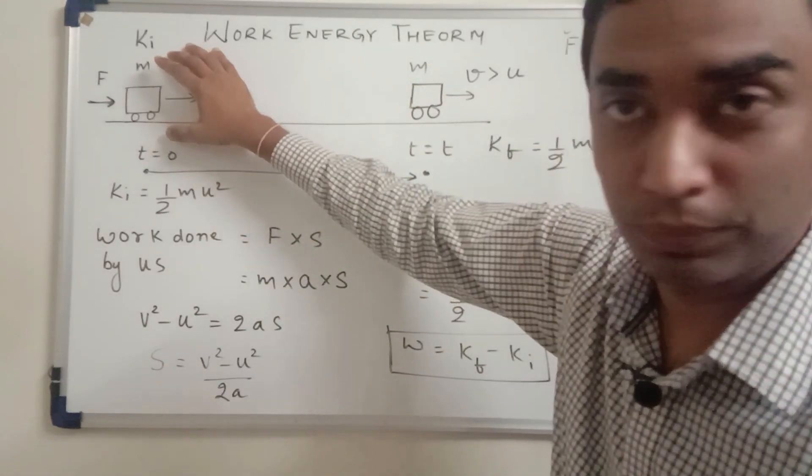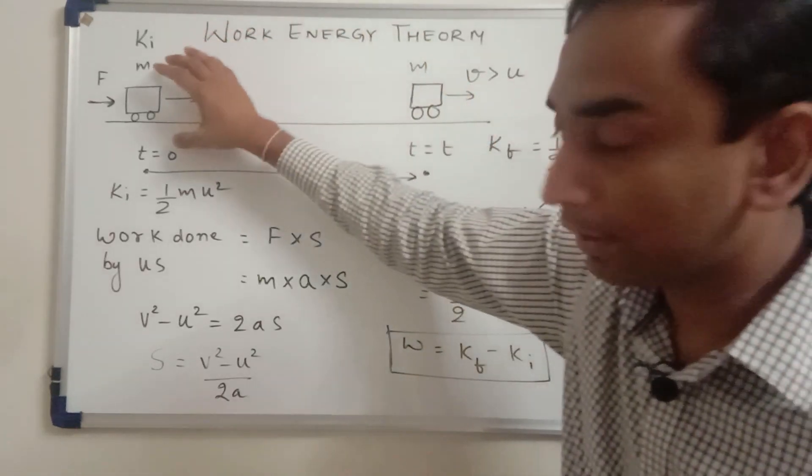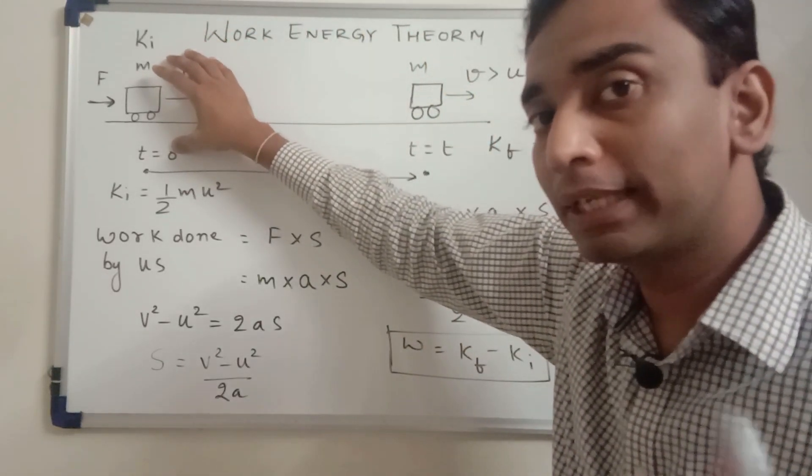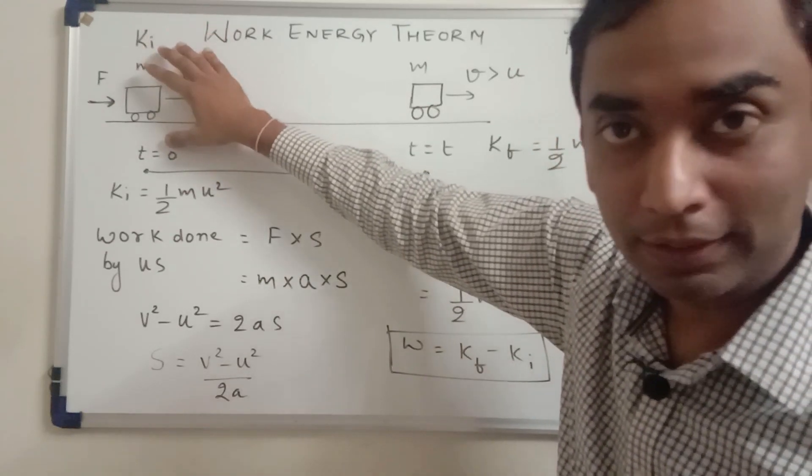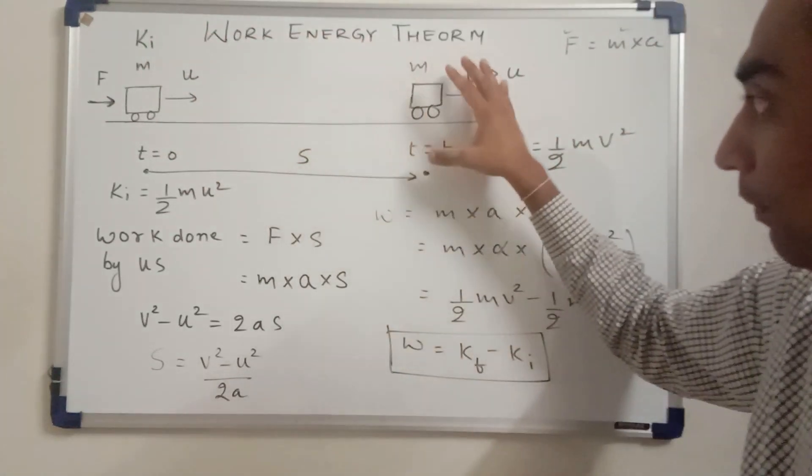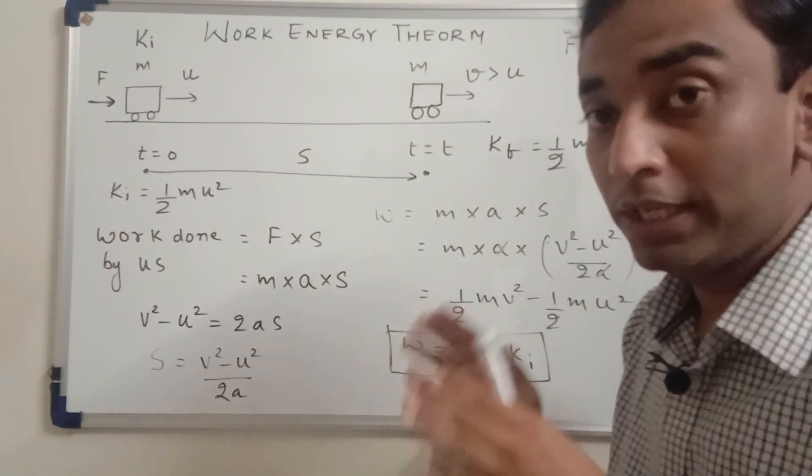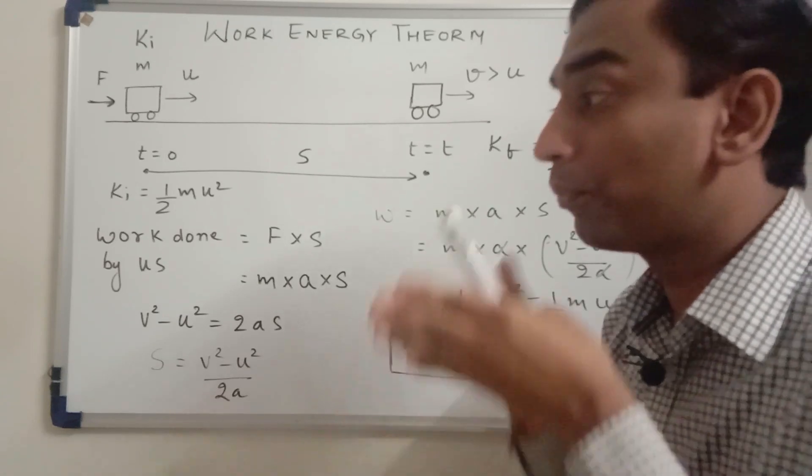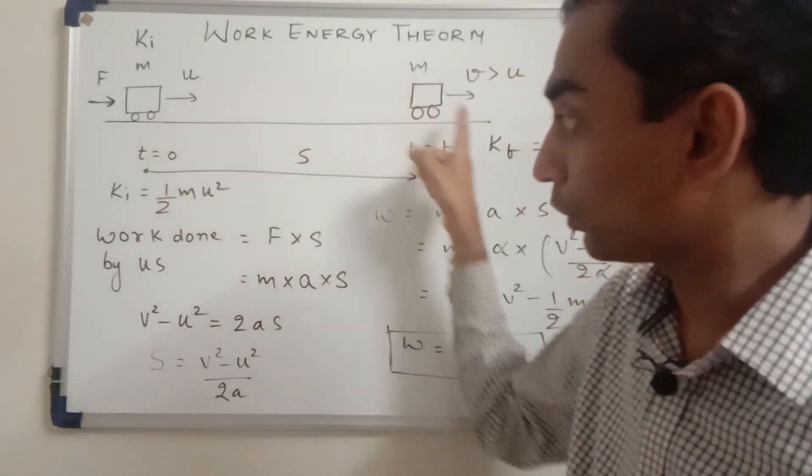If the initial kinetic energy was 50 joules and after stopping the final kinetic energy is zero, that means we also performed the work done of 50 joules in this direction which enabled the car to stop finally.